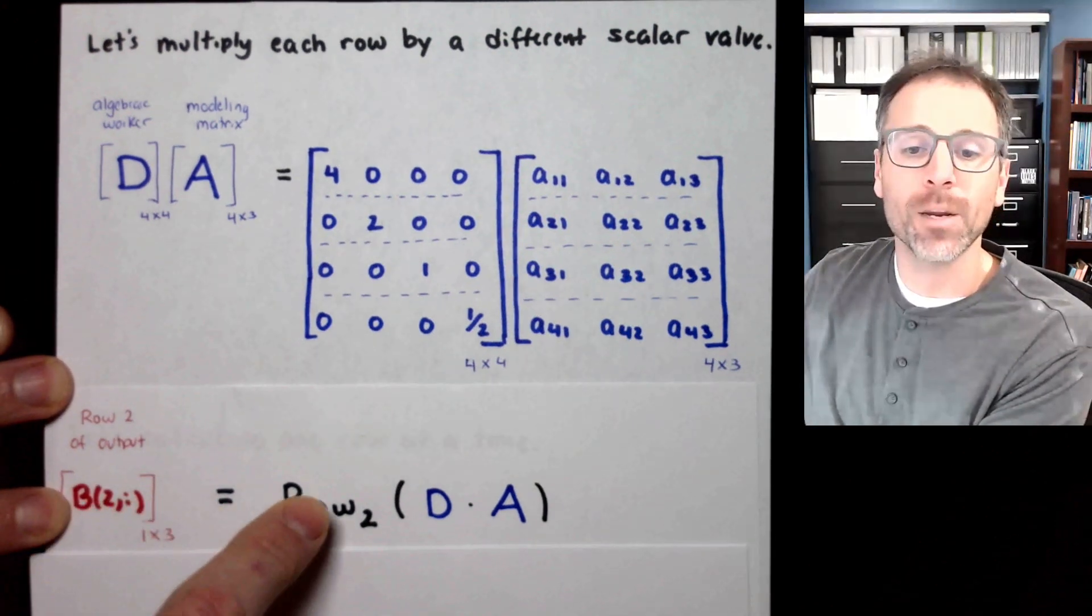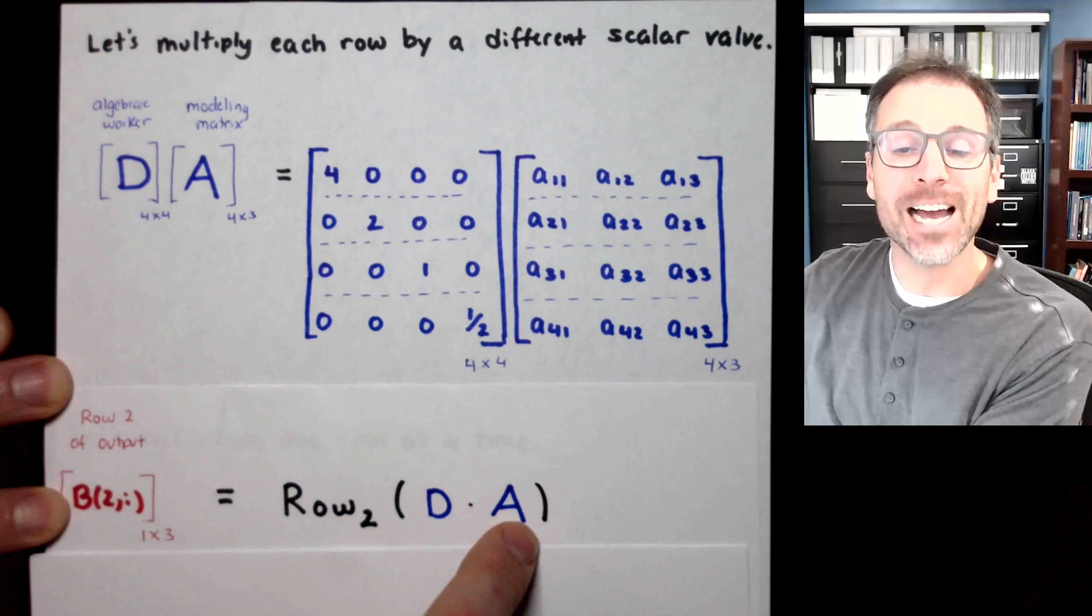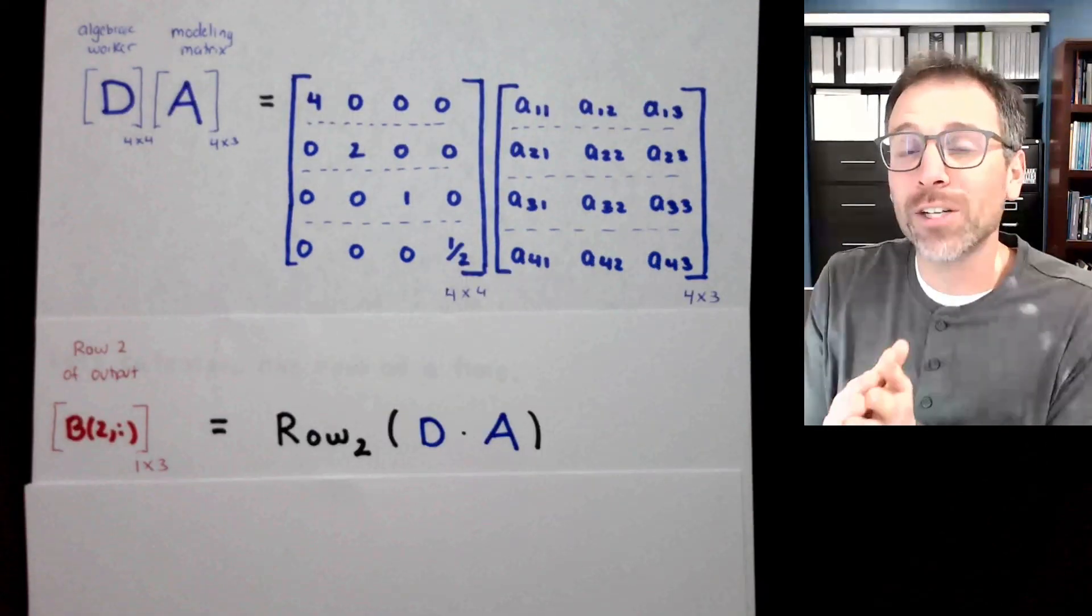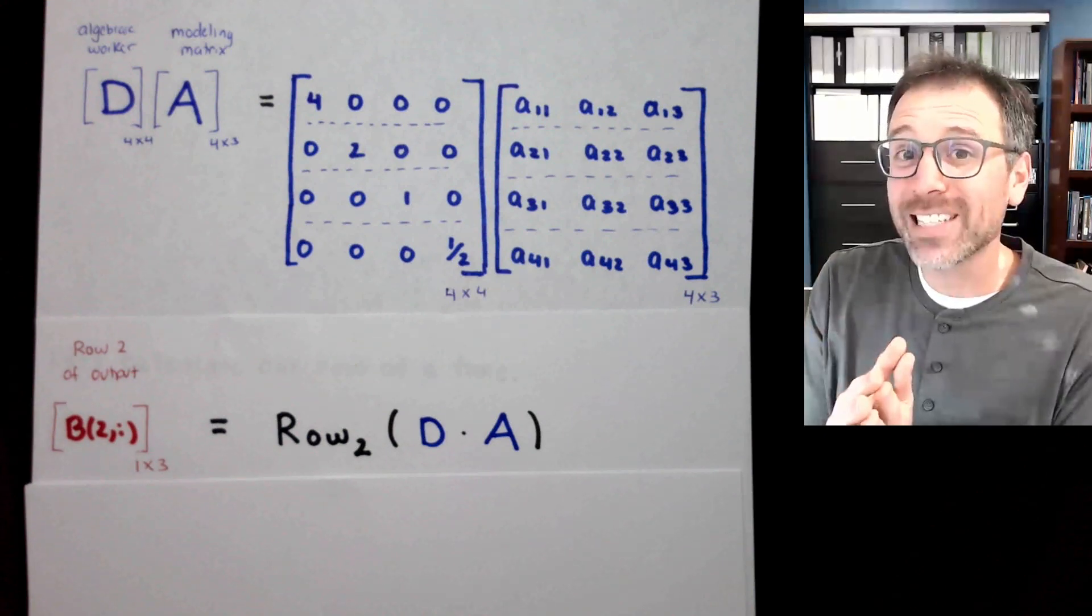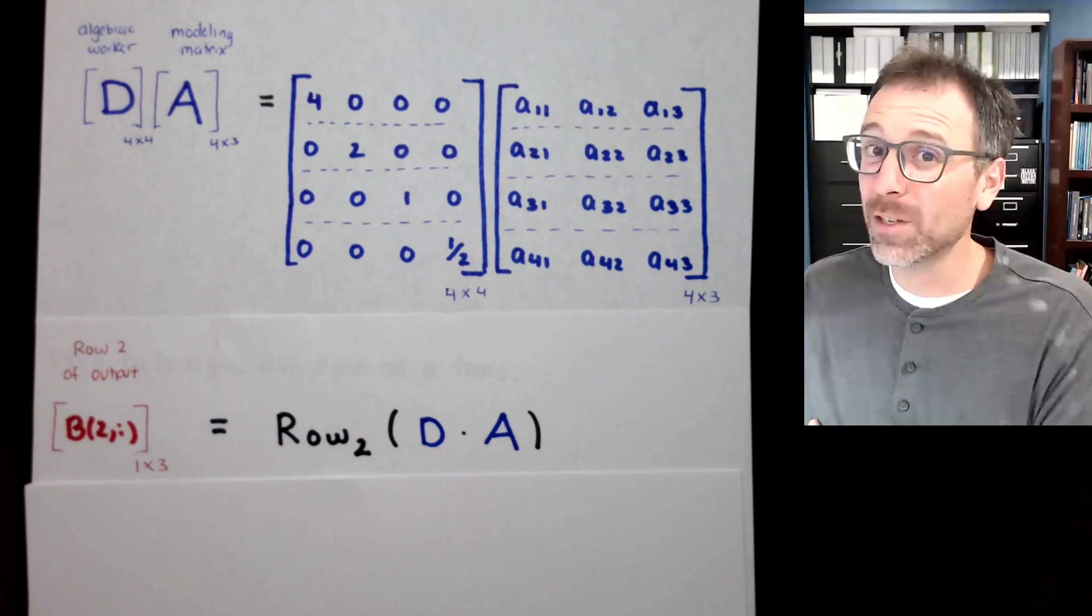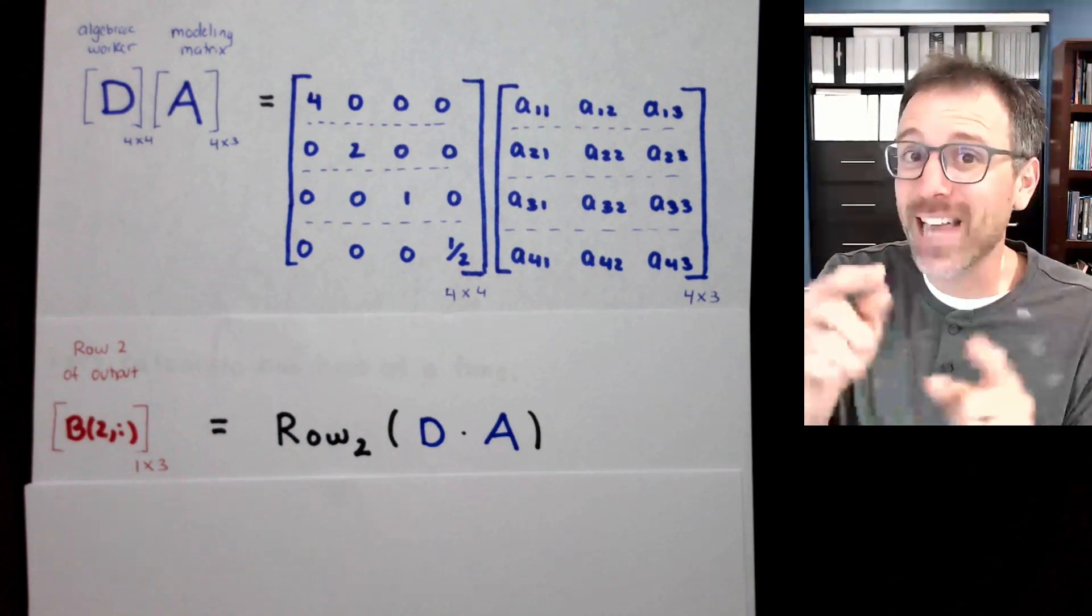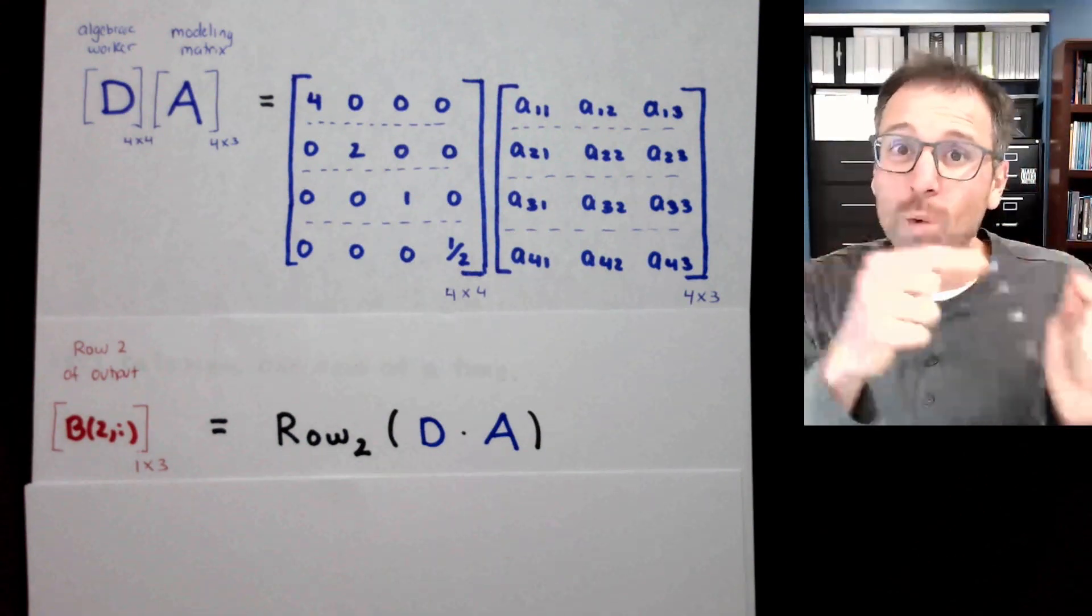So row 2 of our output is going to be row 2 of D times A. Write it down for yourselves. In fact, I'm going to say that for those of you watching at home, I think you're to a place now in this video that you could do the rest of this video for yourself. So if you feel confident in doing that, pause and structure your work in the future based on what we just did.